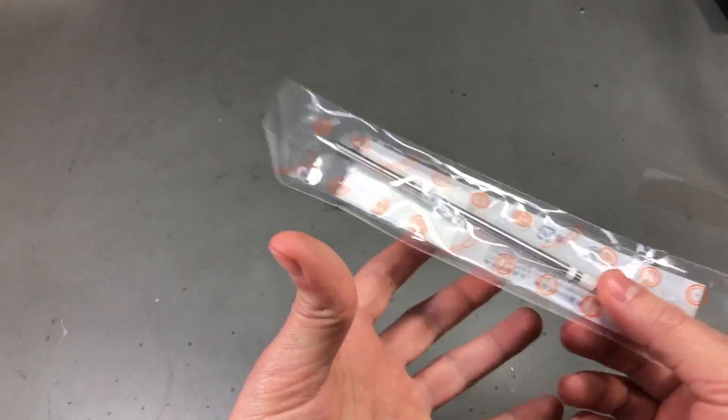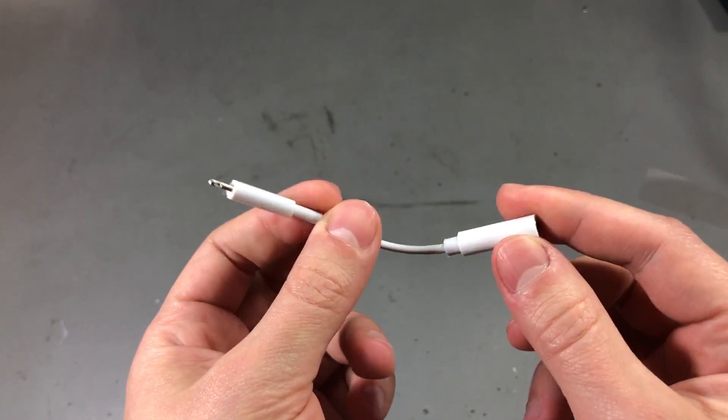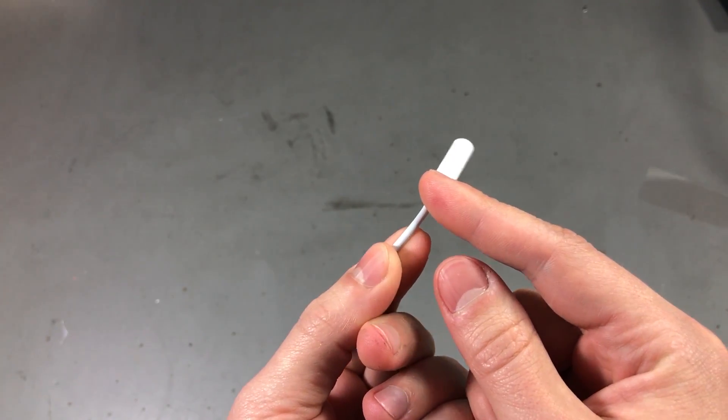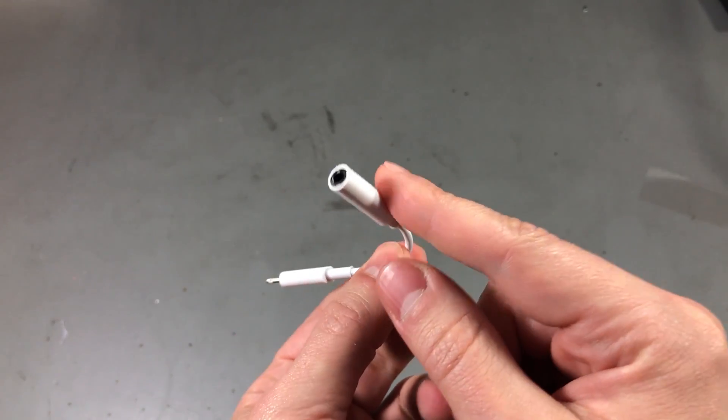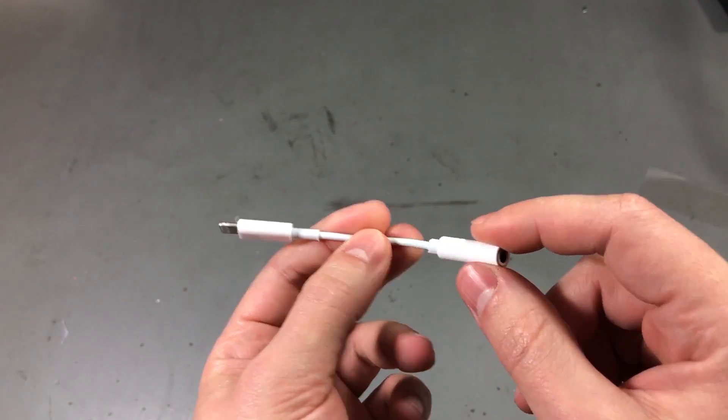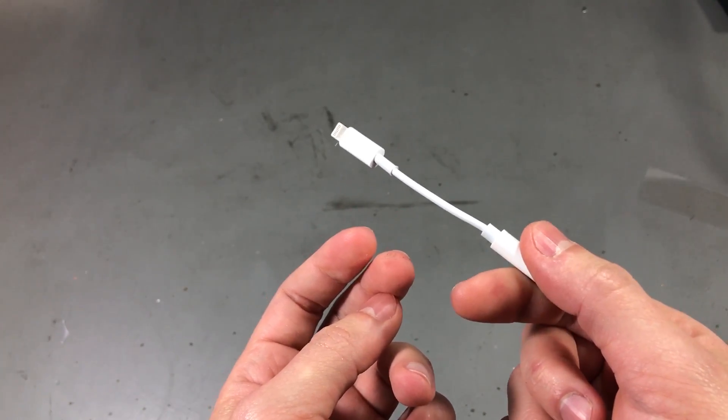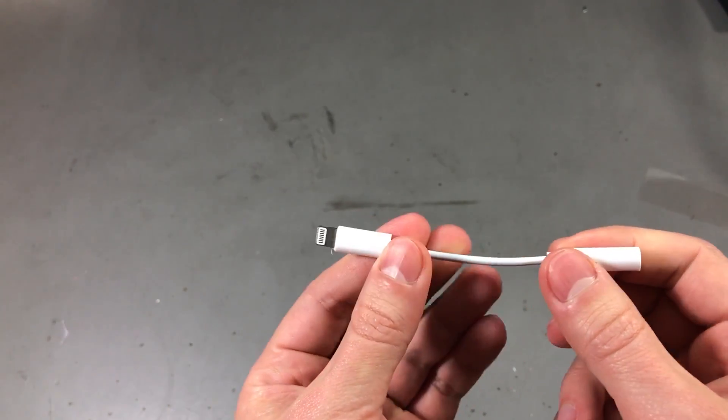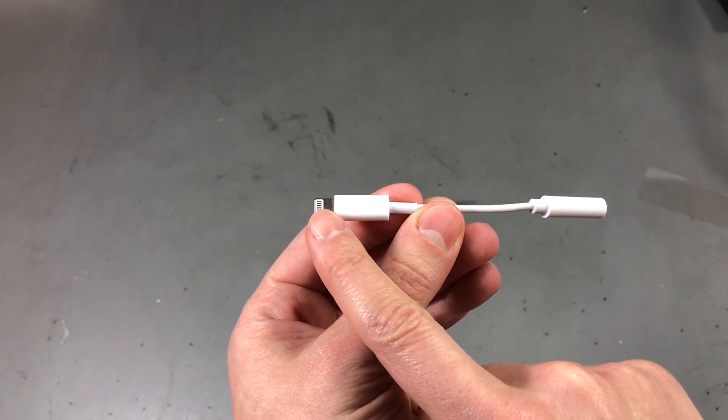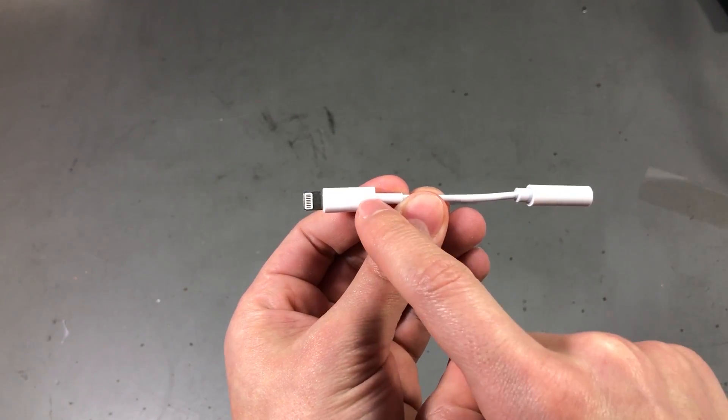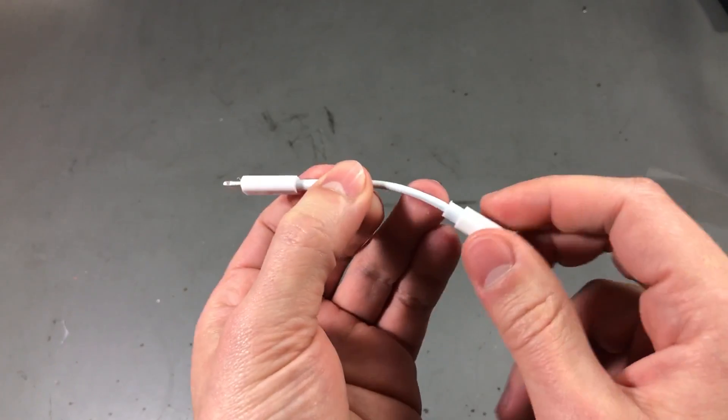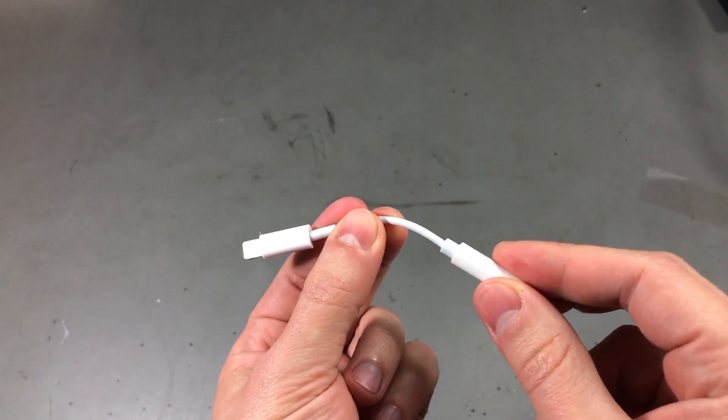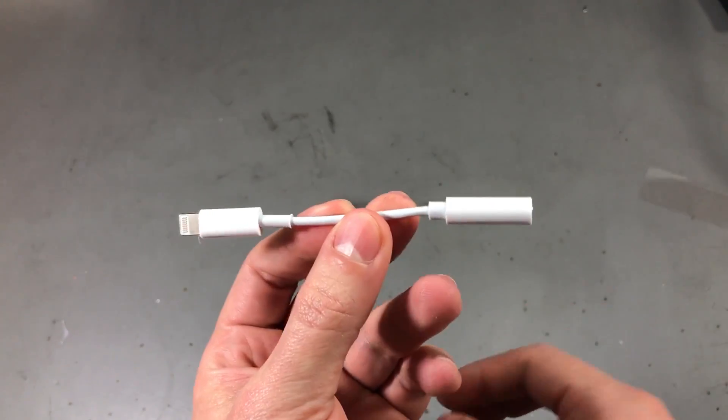One day when I was browsing AliExpress I stumbled upon these lightning to 3.5mm audio adapters for the iPhone. Now I was aware that the genuine versions that you get from Apple contain some electronics, particularly a digital to analog converter because this adapter gets digital data through the lightning port and then does the conversion to analog on this small adapter. So I got one of these fake adapters out of curiosity because I was wondering how did our Chinese friends manage to copy these, what did they put inside.